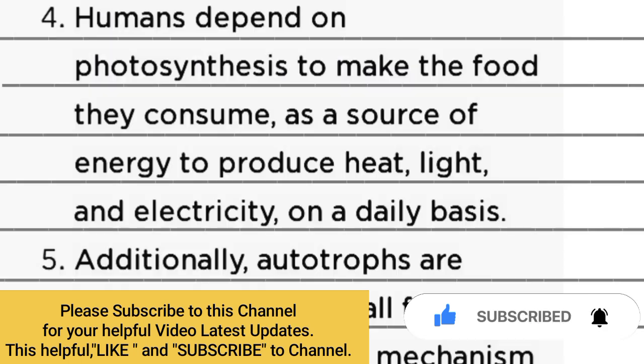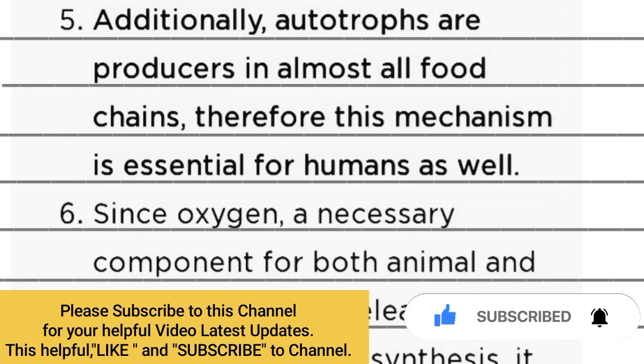Number four: Humans depend on photosynthesis to make the food they consume as a source of energy to produce heat, light, and electricity on a daily basis. Number five: Additionally, autotrophs are producers in almost all food chains.